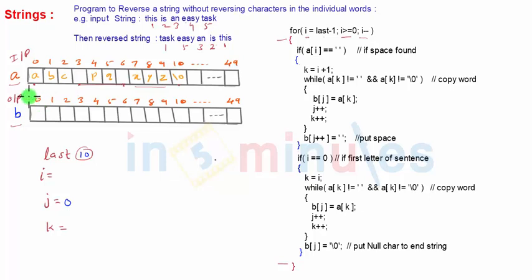So till we get space or a null character, we'll keep copying the word's characters from 'a' into 'b'. Now this entire logic we'll try to understand step by step.